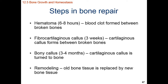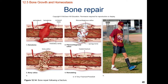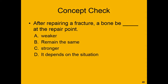Let's say you break a bone — what steps do you go through as you repair it? The first step is the hematoma, or blood clot, which forms within six to eight hours and is held in place by the periosteum. After clotting, the blood turns into fibrocartilage, which is then replaced with spongy bone to form a bony callus. Then we have more ossification and remodeling, resulting in a healed fracture where the compact bone on the outside of the diaphysis is thicker than before. Concept check: after repairing a fracture, would a bone be weaker, remain the same, stronger, or does it depend on the situation? Pause the video and give me an answer.